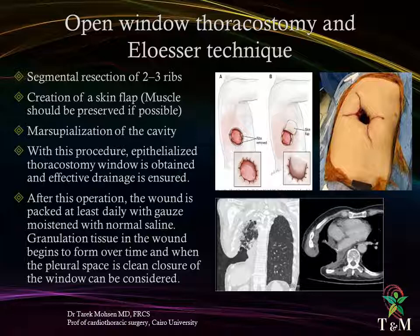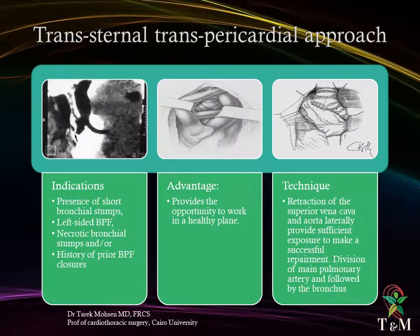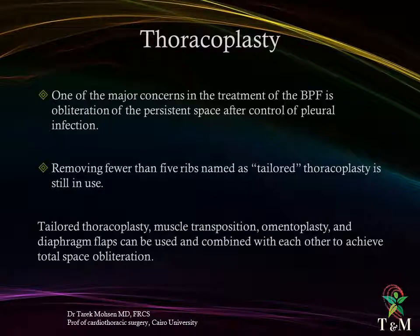The window is packed at least daily with moist dressings with normal saline. Granulation tissue begins to form over time, and when the pleural space is clean, closure of the window can be considered. The transternal transpericardial approach has been proposed for short stump, left-sided bronchopleural fistula, necrotic bronchial stump, or history of prior bronchopleural fistula closure. The advantage is working in a healthy plane, and the technique involves retraction of the SVC and ascending aorta, division of the pulmonary artery, encircling the main bronchus, and division with control of both ends.